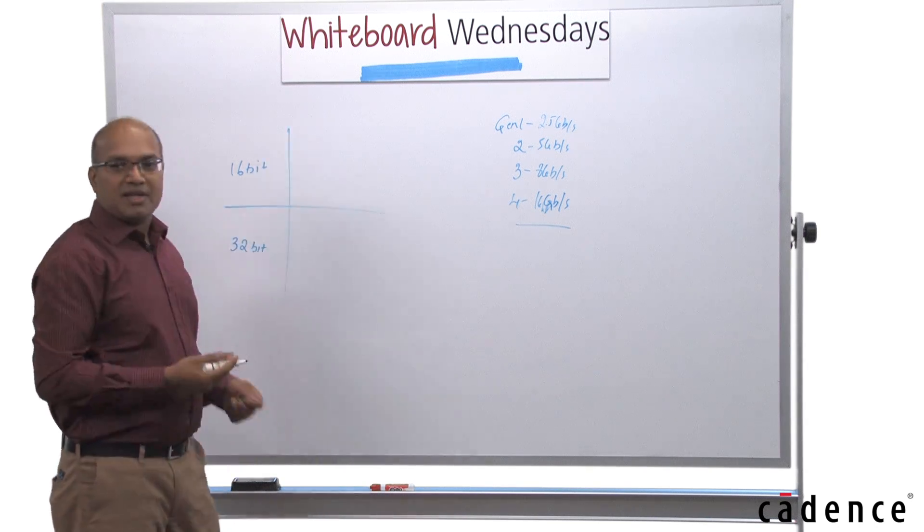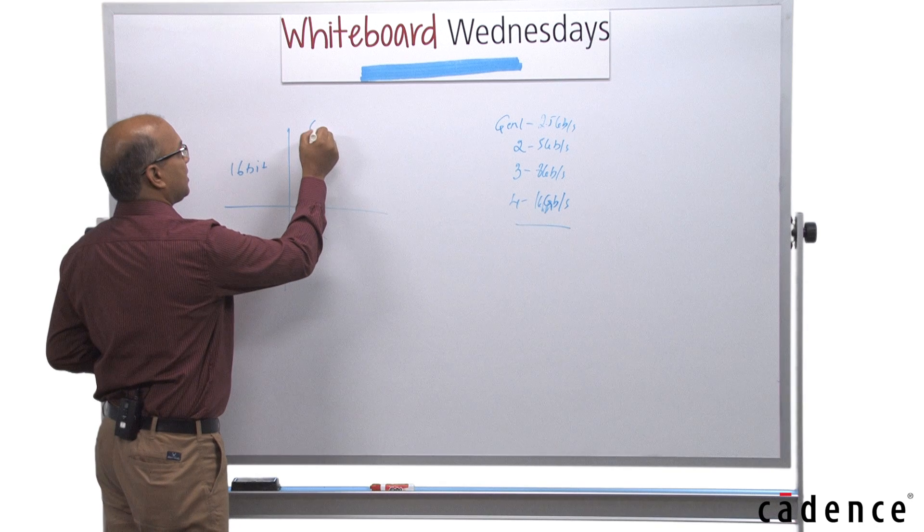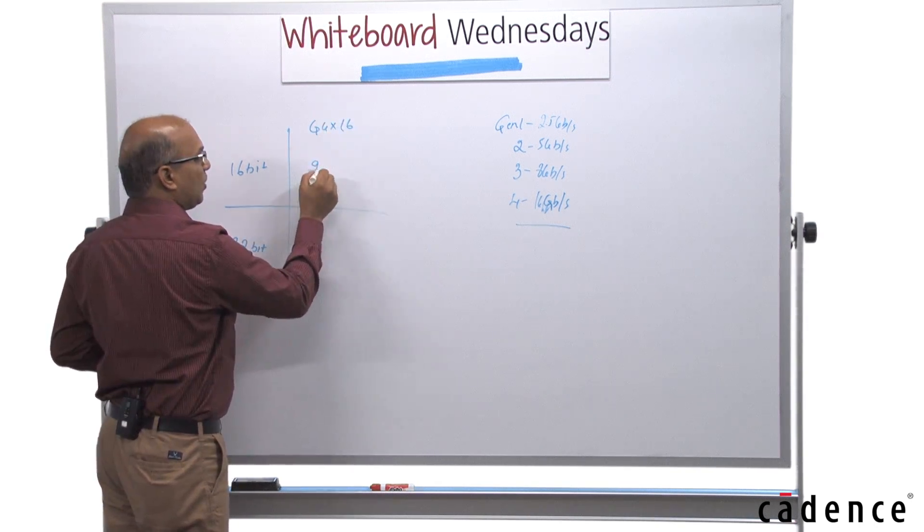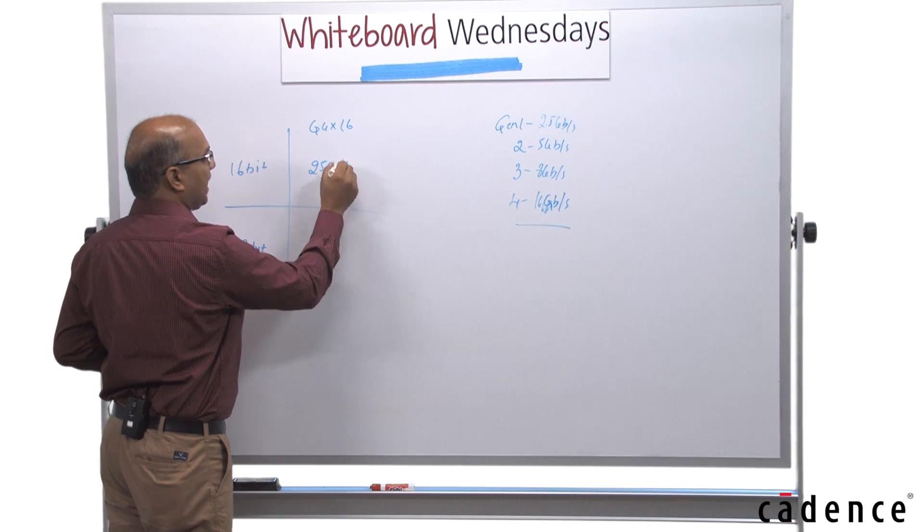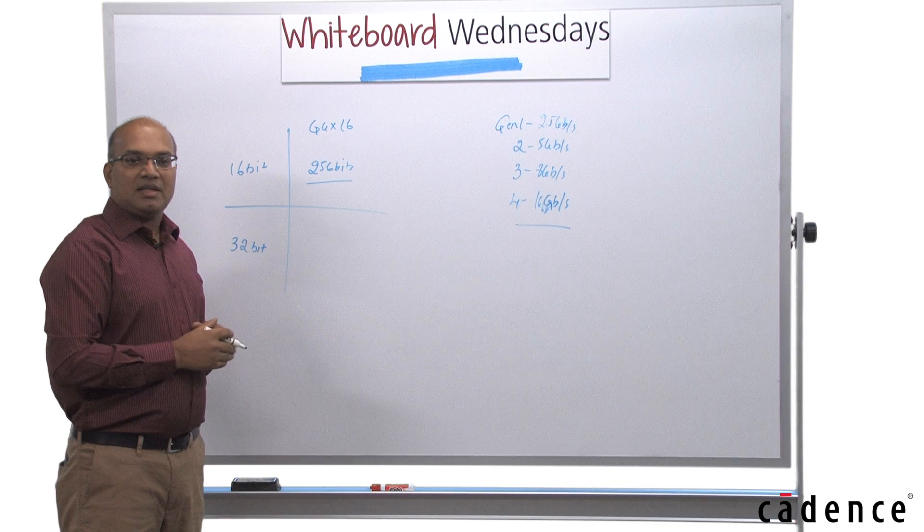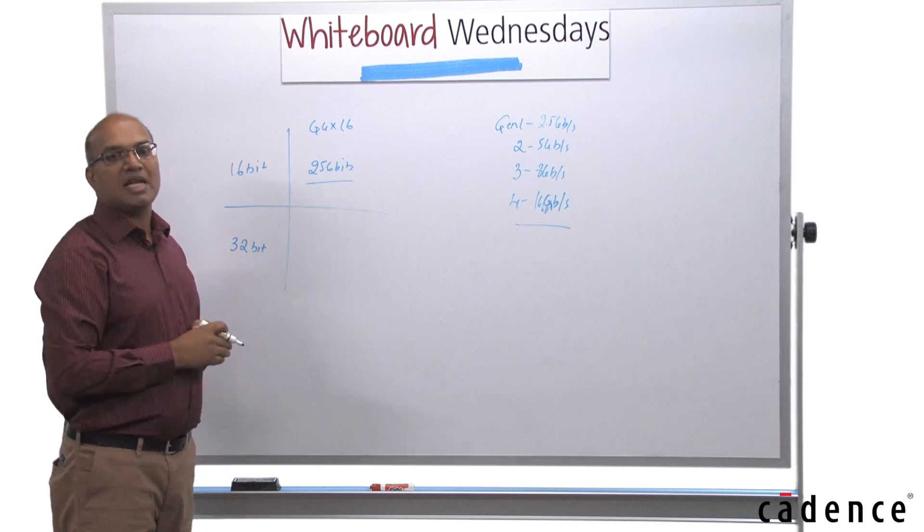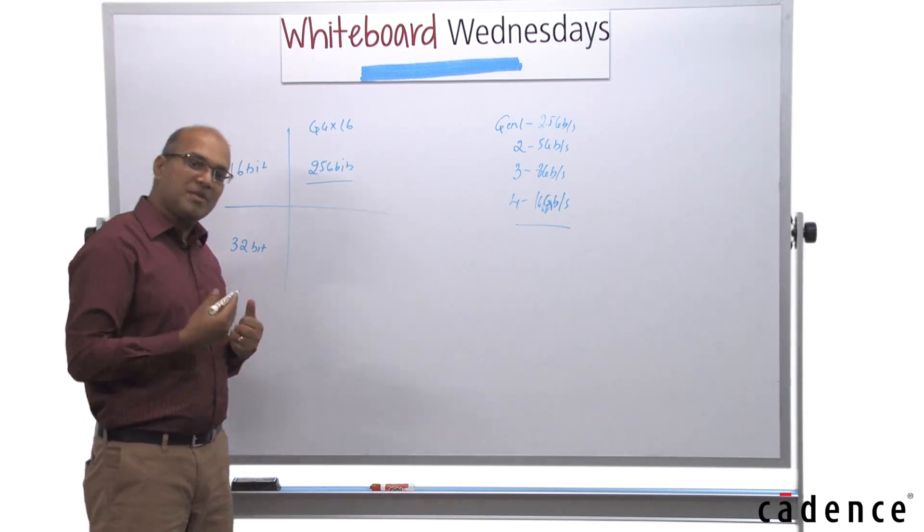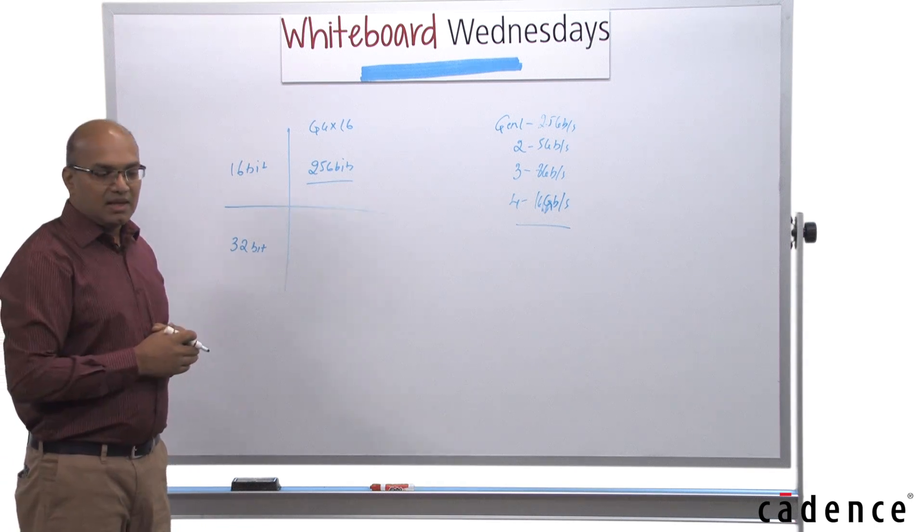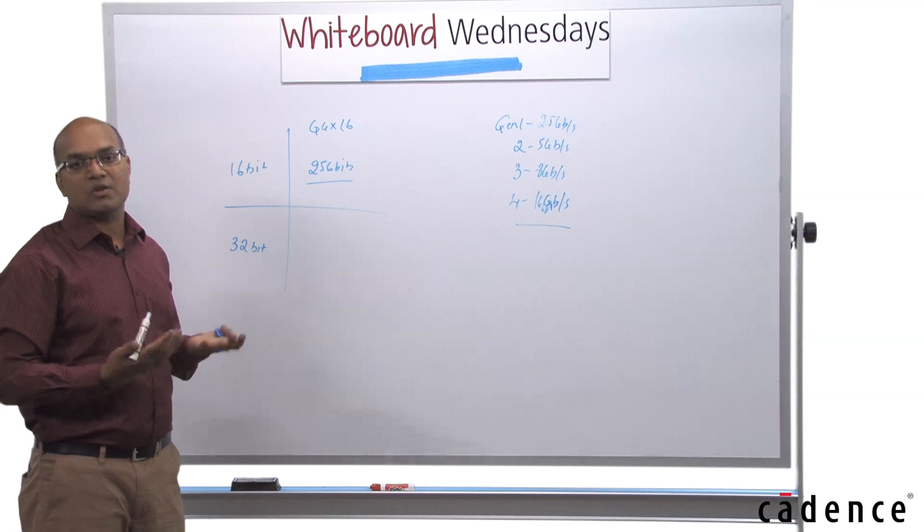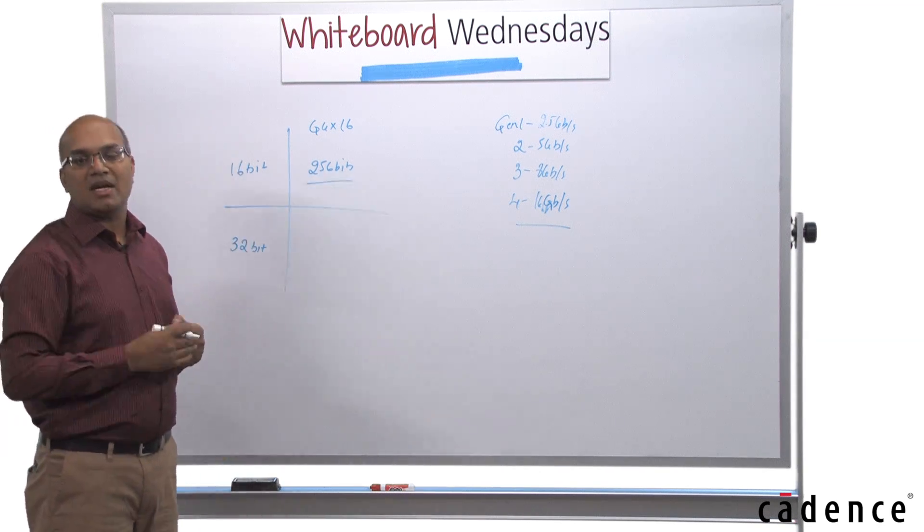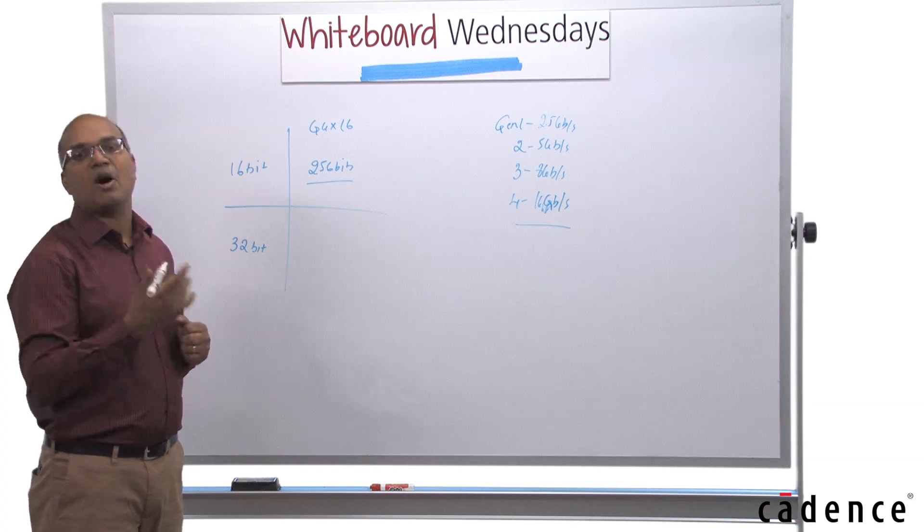So in a 16-bit pipe interface, let's say we go Gen 4 by 16, you'll have 256 bits of data that is given to the user interface. So in 256 bits of data, two small TLPs can come simultaneously. Because two small TLPs can come simultaneously, all our processing steps have to decode these two TLPs simultaneously and process it, and also write to the memory so that the performance is maintained.